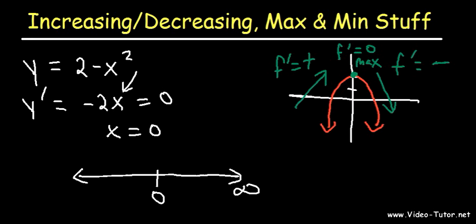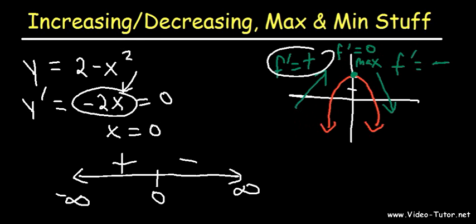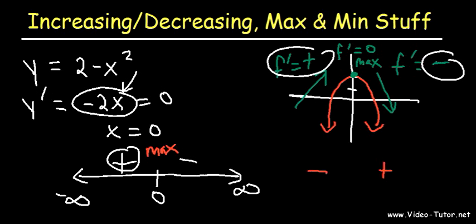If you plug in 1 into the derivative, you're going to get a negative answer. If you plug in negative 2 into negative 2x, you're going to get a positive answer. And that's what we see here — to the left of 0 the first derivative is positive, to the right it's negative. So when it changes from positive to negative, you have a local maximum. If it changes from negative to positive, then you have a local minimum.